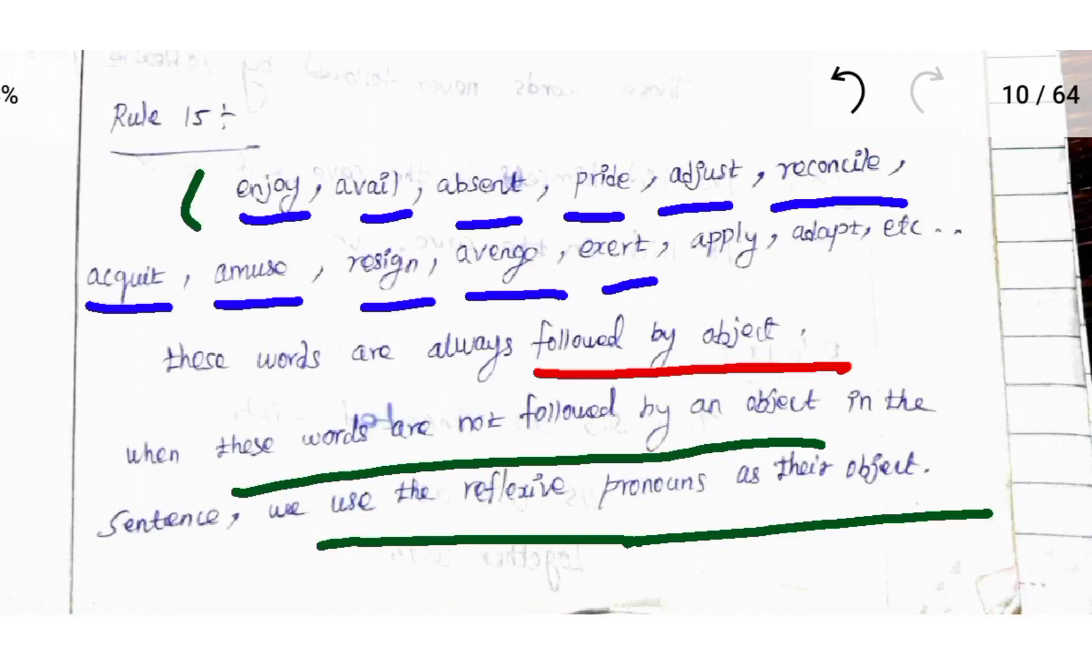Students, to understand Rule Number 15: there are some words that are always followed by object. But in some cases, there is no object present in the sentence, so we use reflexive pronoun as their object.